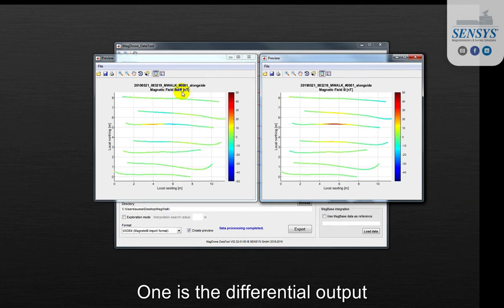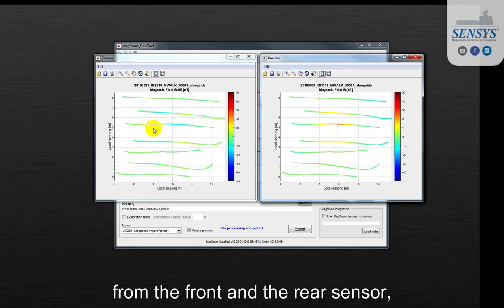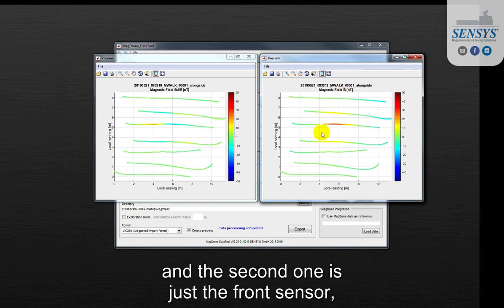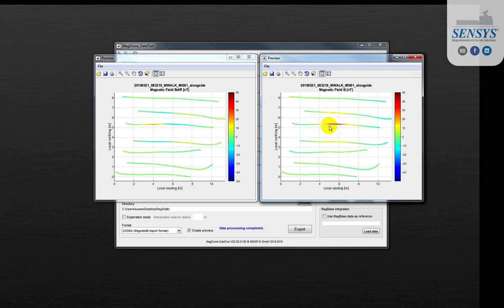One is the differential output from the front and the rear sensor and the second one is just the front sensor, so sensor one.